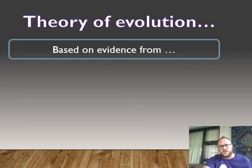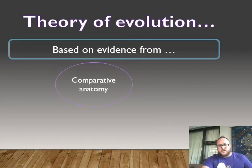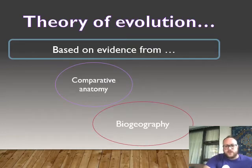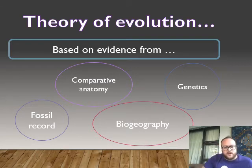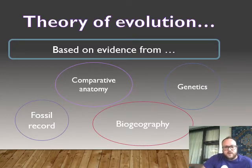So the theory of evolution — remember that it's based on information and evidence, and it may change as we change as well. These are the four main pillars of the evidence of evolution: the fossil record, comparative anatomy, biogeography, and genetics.